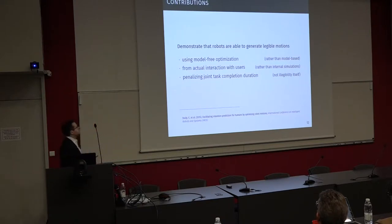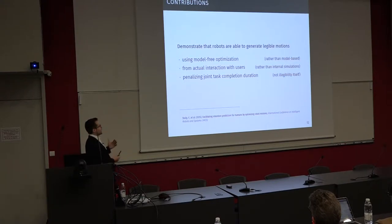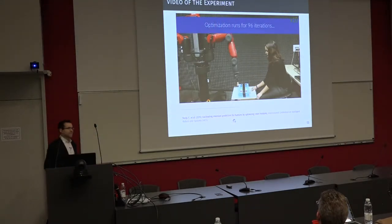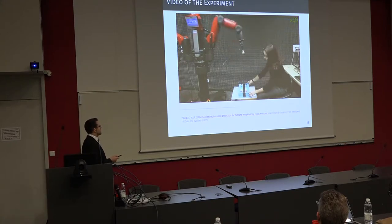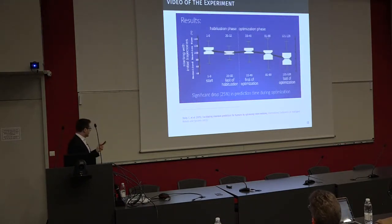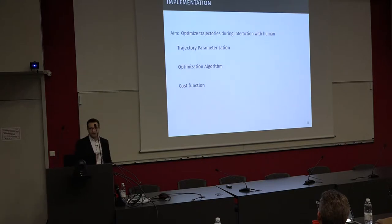We demonstrate that robots are able to generate legible motions using model-free optimization techniques instead of model-based approaches, by interacting with real users. The way we did it is not by defining what legible motion is, but rather by having what we call a proxy reward function that optimizes for something else — and at the end, we see the emergence of legibility. Let me show the setup. The robot moves toward one of two targets on a box, and the user is asked to press the same button on their box as fast as possible. After some time, the user gains in terms of prediction time. In order to do that, we considered three main components: a trajectory parametrization, an optimization algorithm, and a cost function.